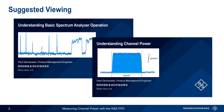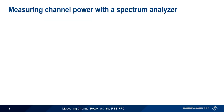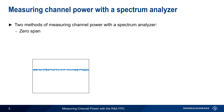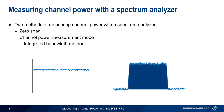If you're not already familiar with these topics, or if you'd like a brief refresher, you may want to watch the presentations Understanding Basic Spectrum Analyzer Operation and/or Understanding Channel Power before beginning this presentation. As you should already know, there are two methods for measuring channel power with a spectrum analyzer. The first is using zero-span mode. The second is the channel power measurement mode, which is based on the so-called integrated bandwidth method.